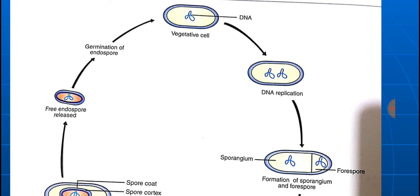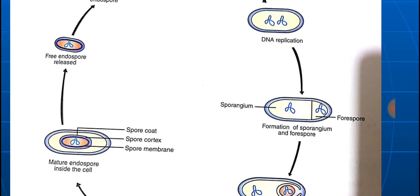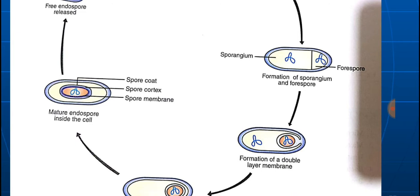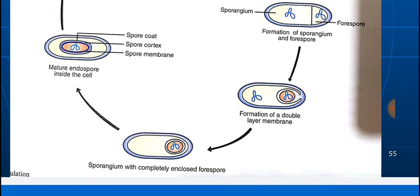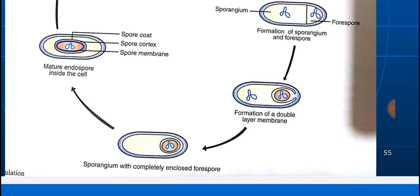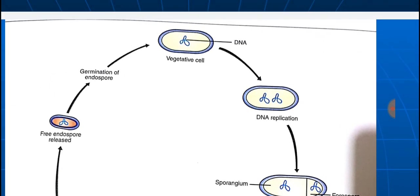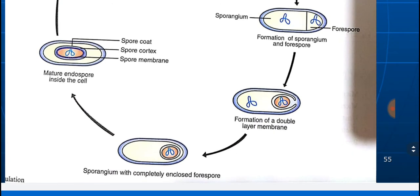To revise: the vegetative cell with DNA replicates into two; a septum divides it into the forespore and sporangium. A double-layered membrane encloses the forespore fully. The inner layer is the spore membrane, the outer is the thickened spore coat, and the cortex lies between them. Mature endospores are released as free endospores and germinate under conducive conditions to form a vegetative cell.